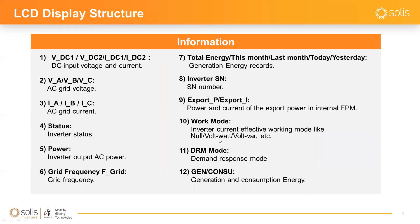Export P and Export I show the power and current you're exporting to the grid — these only appear when you've connected a meter or CT and enabled the internal EPM function. Work Mode is related to the grid standard code; some standards enable working modes like Volt-Watt or Volt-VAR, but most will show 'Norm.' DRM (Demand Response Mode) is mainly for Australia. The generation and consumption display is available after connecting a smart meter, and you can also see that data in the Solis monitoring system.